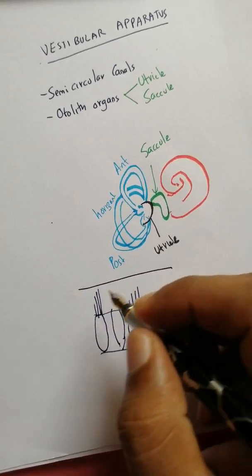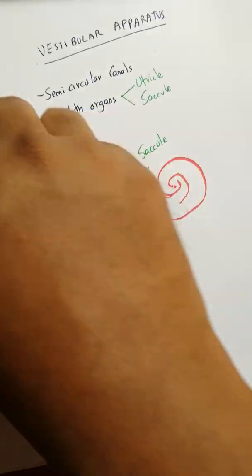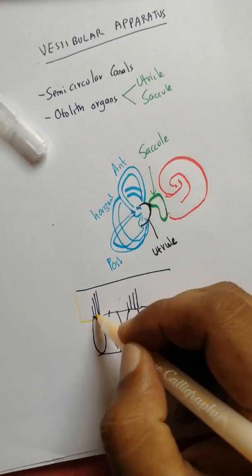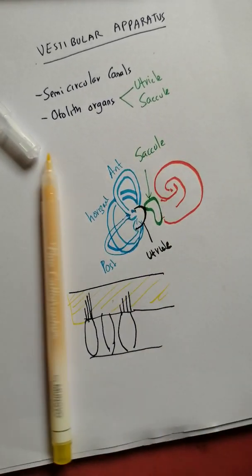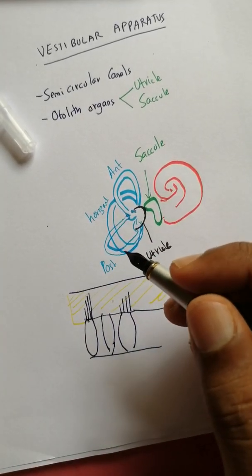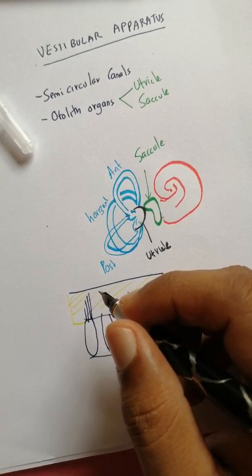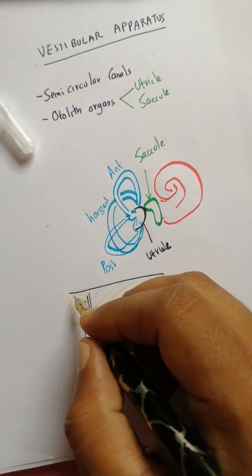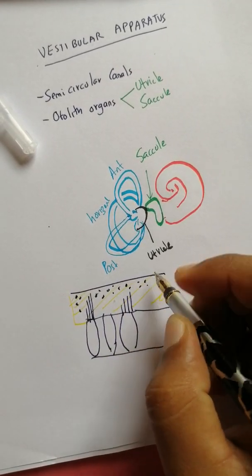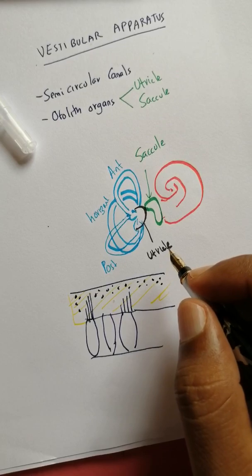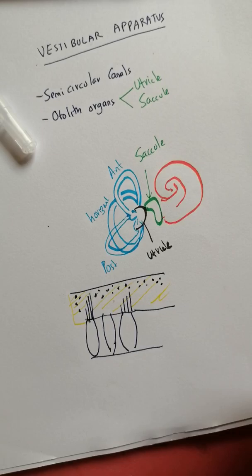These hair cells are actually embedded in a matrix. In the matrix you have a lot of—let me just say sand, but anyway—you have a lot of crystals of calcium carbonate known as otoliths or otoconia. They are present in this matrix.